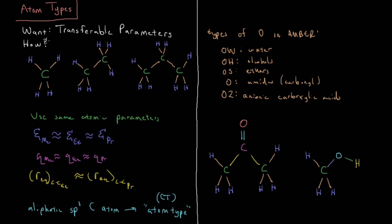That's the basis of atom types: whenever you have similar elements in similar chemical environments, you can define the same parameters for them and save yourself the effort of deriving new parameters for every single molecule that comes up.